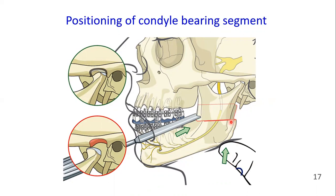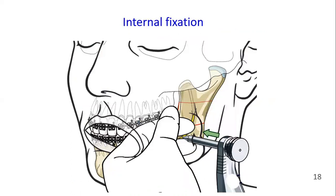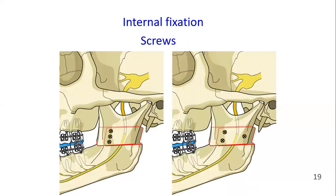Internal fixation is usually performed with positioning screws, plates, or combinations. Screw placement is usually performed with either transbuccal instrumentation or angulated drills and screwdrivers. A minimum of two, and preferably three, bicortical position screws are placed between the buccal and lingual cortices. Care should be taken to avoid damaging the inferior alveolar nerve.